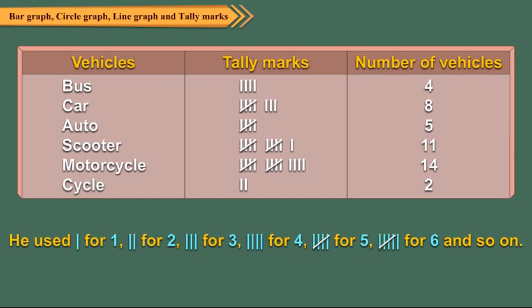Sameer was trying to record the number of different vehicles passing through a road between 10 a.m. to 11 a.m. He used tally marks to record the observations. The number of times a given observation occurs is called its frequency. For example, the frequency of bus is 4, car is 8, auto is 5, scooter is 11, motorcycle is 14 and cycle is 2.